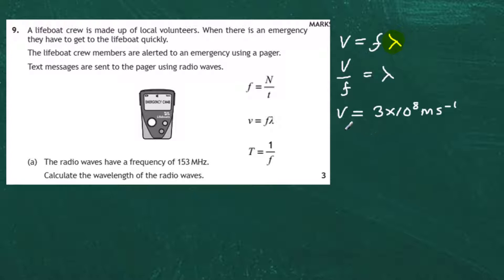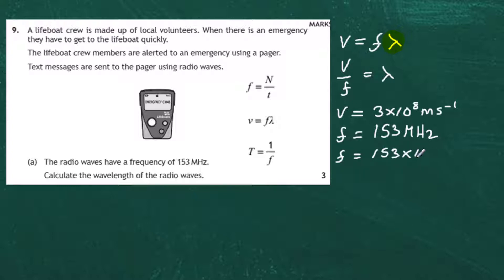The frequency has been given as 153 megahertz. Megahertz is one million hertz, which in standard form is 153 × 10⁶ hertz. So we now have the wave speed and the wave frequency — all we have to do is calculate the wavelength. Wavelength λ equals the wave speed, 3 × 10⁸ metres per second, divided by the frequency.